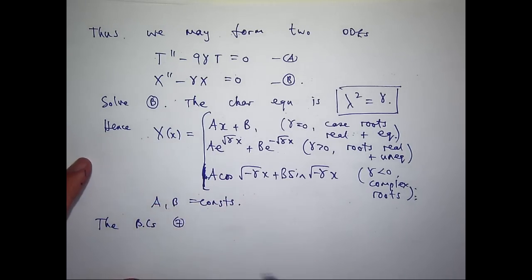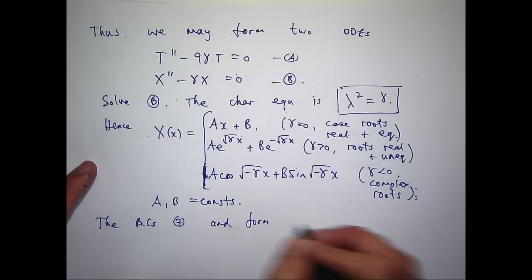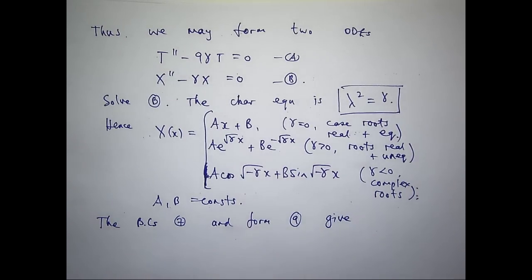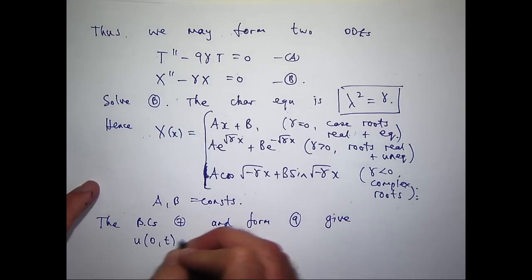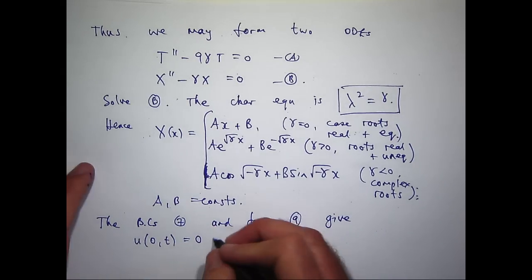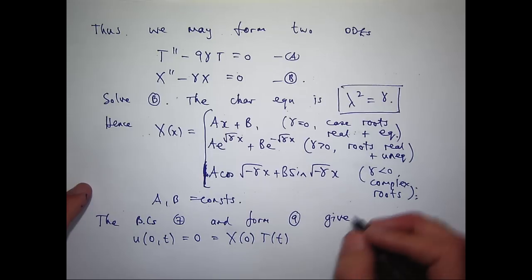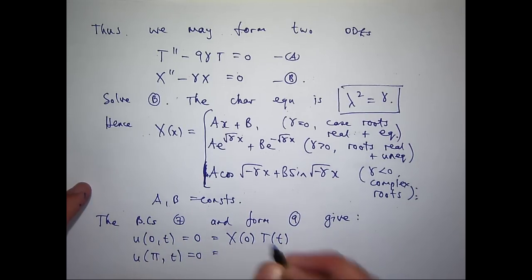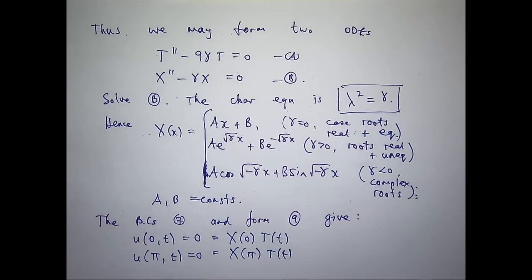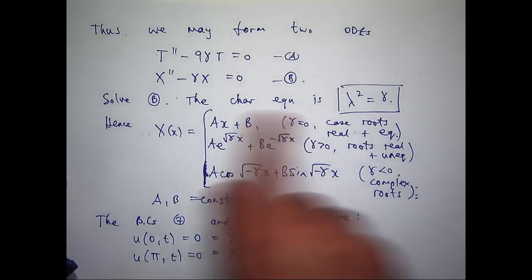Boundary condition 7 and form 9 give the following. The left-hand boundary condition, from our assumed form of solution, gives one equation. The second boundary condition in 7 gives another. Looking at these two bottom equations, either big T is zero for all t — not interested, that gives the trivial solution — or big X of 0 equals 0 and big X of pi equals 0. Those are the boundary conditions we want, and we go back to analyze the three cases.